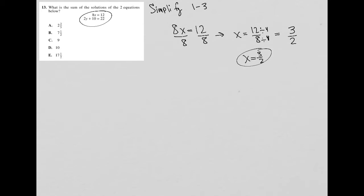Now the next equation here that I can simplify says 2y plus 10 equals 22. So I'm going to subtract 10 from both sides, leaving me with 2y equals 12. Divide both sides by 2, and I have from that that y equals 6.